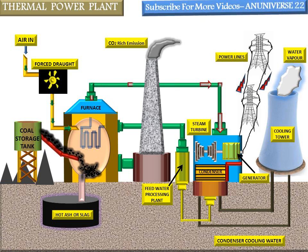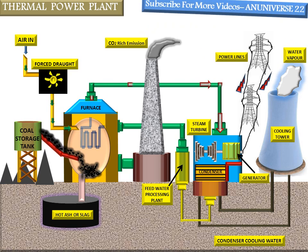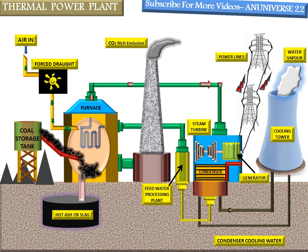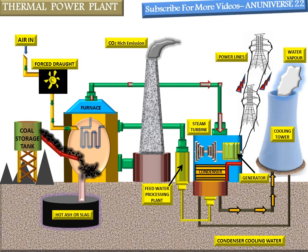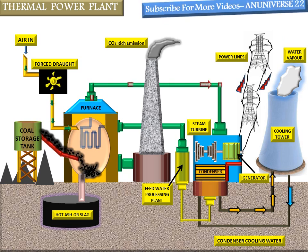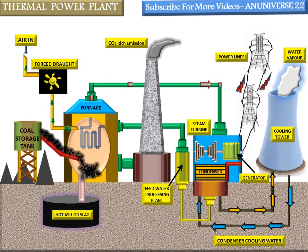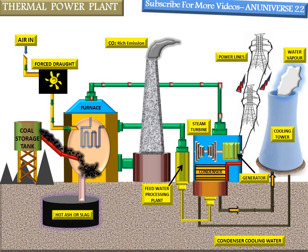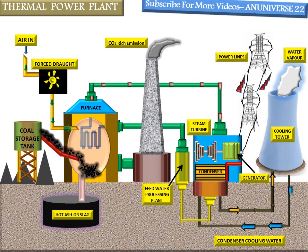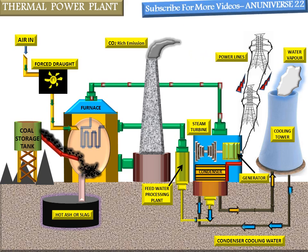This turbine is coupled with the shaft of the generator. With the help of the generator, electricity is produced and finally transferred through the power lines to the grid. The condenser is located here. Its function is to condense the steam coming out of the steam turbine at low pressure. This condensate is sent back to the boiler after passing through the cooling tower with the help of the feed water processing plant.